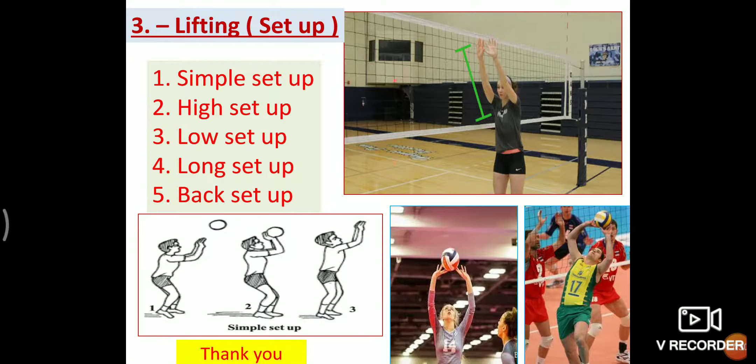Second, high setup. The setter lifts the ball higher over his own head near the net. This is called high setup. In this setup, player lifts the ball over the net approximately 1.25 meters to 1.50 meters high.